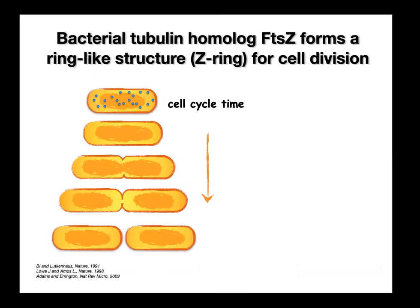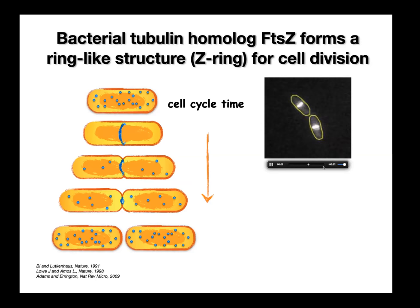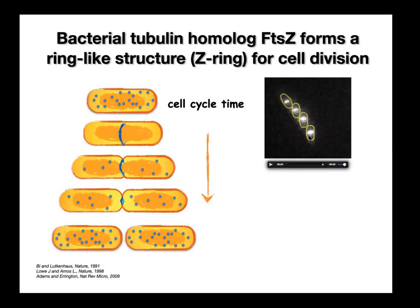Before that, I have to first talk about FTSZ. FTSZ is a tubulin homolog. It's very important for bacterial cell division. At the beginning of cell division, it's scattered inside the cell. When the cell is about to divide, it comes to the middle and forms a ring-like structure. Gradually, this ring shrinks in diameter and divides the two daughter cells, then scatters into the daughter cells again. Here I'm showing you a movie — we labeled FTSZ with GFP. You can clearly see it at the middle of the cell, gradually shrinking in diameter and dividing the cells.